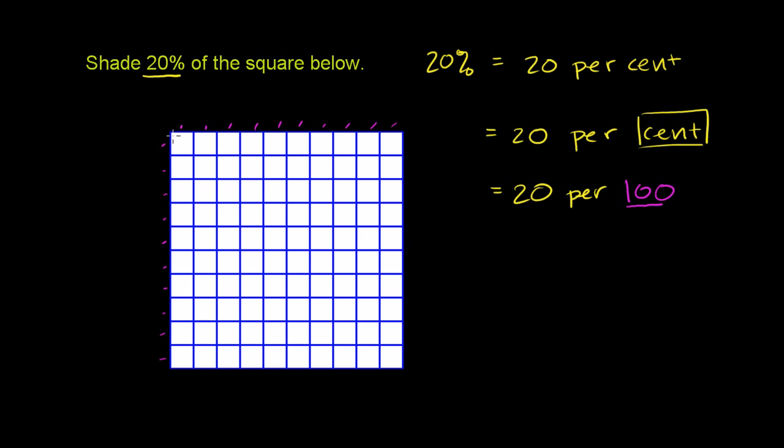Let me just do 1. If I just do 1 square like that, I have shaded 1 per 100 of the squares. 100 out of 100 would be the whole; I've shaded 1 of them. That 1 square by itself would be 1% of the entire square. If I were to shade another one—if I shade that and that—those two combined are 2% of the entire square.